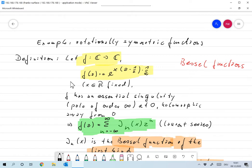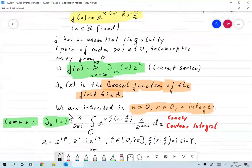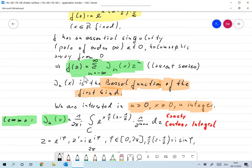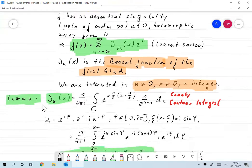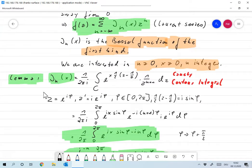So the Laurent series exists, and we can write it as f(z) = Σ j_n(x) z^n, where j_n(x) are now the Laurent coefficients. And of course they depend on x since x was a part of f. We call j_n(x) the Bessel function of the first kind. We are interested in this lecture only for integer n ≥ 0, and x probably ≥ 0. I'm mentioning that because there's also fractional Bessel functions which we're not really interested in.